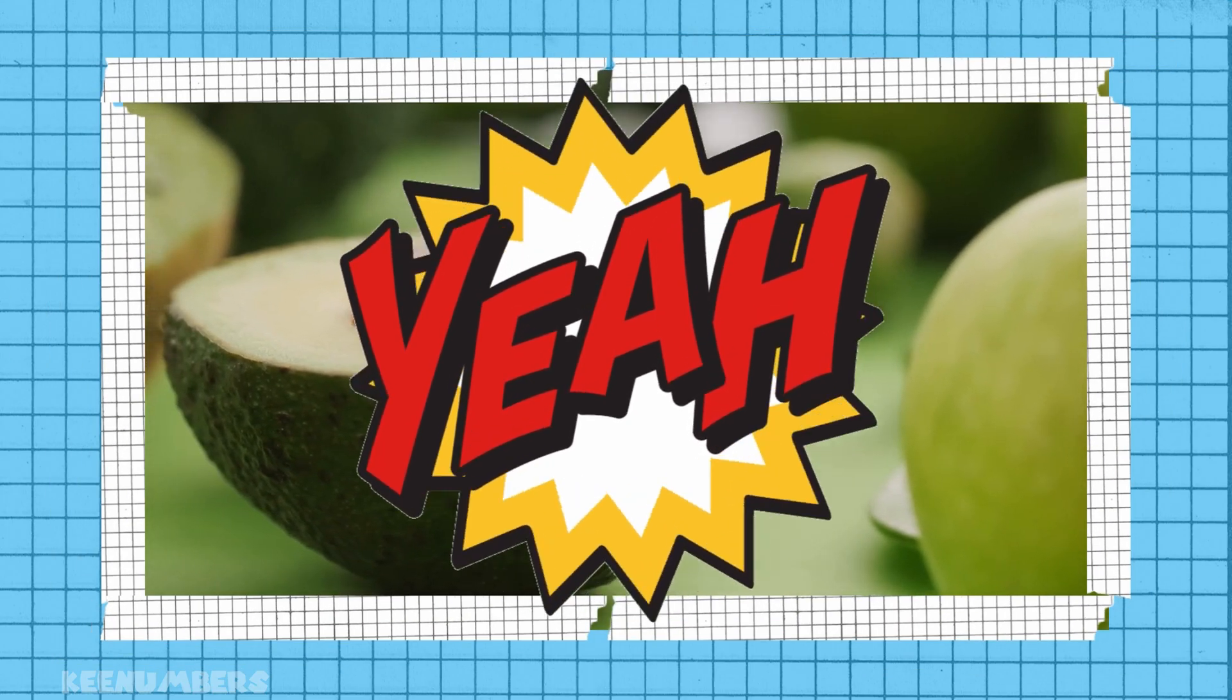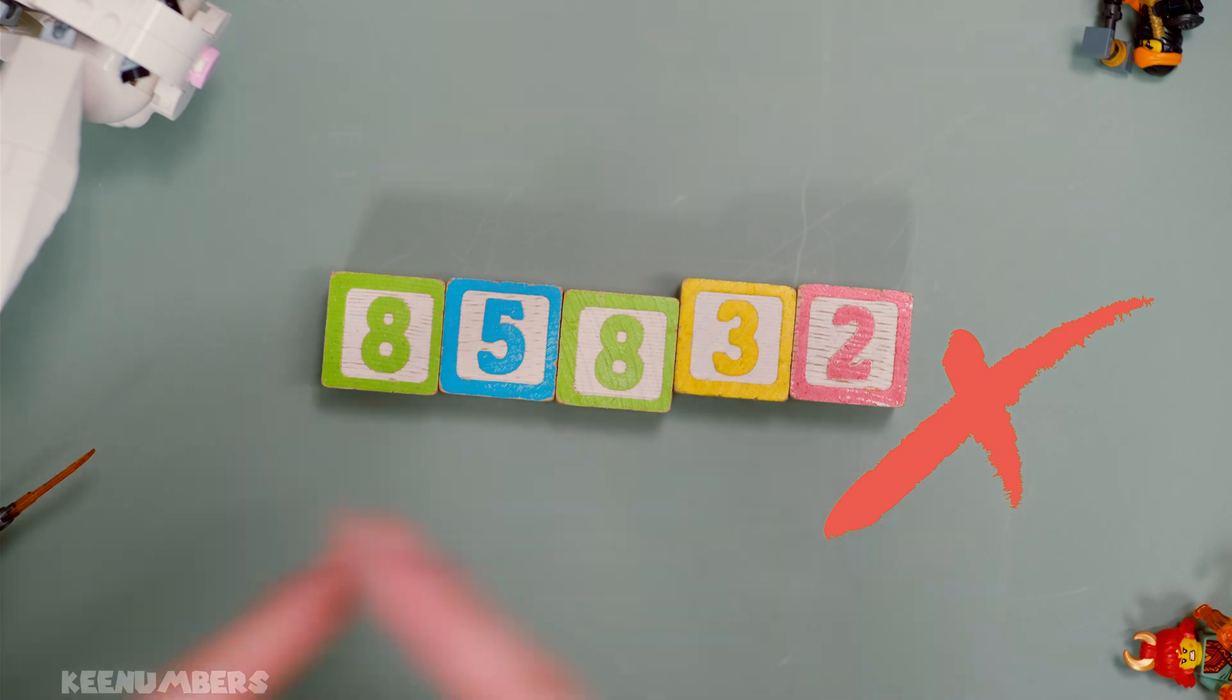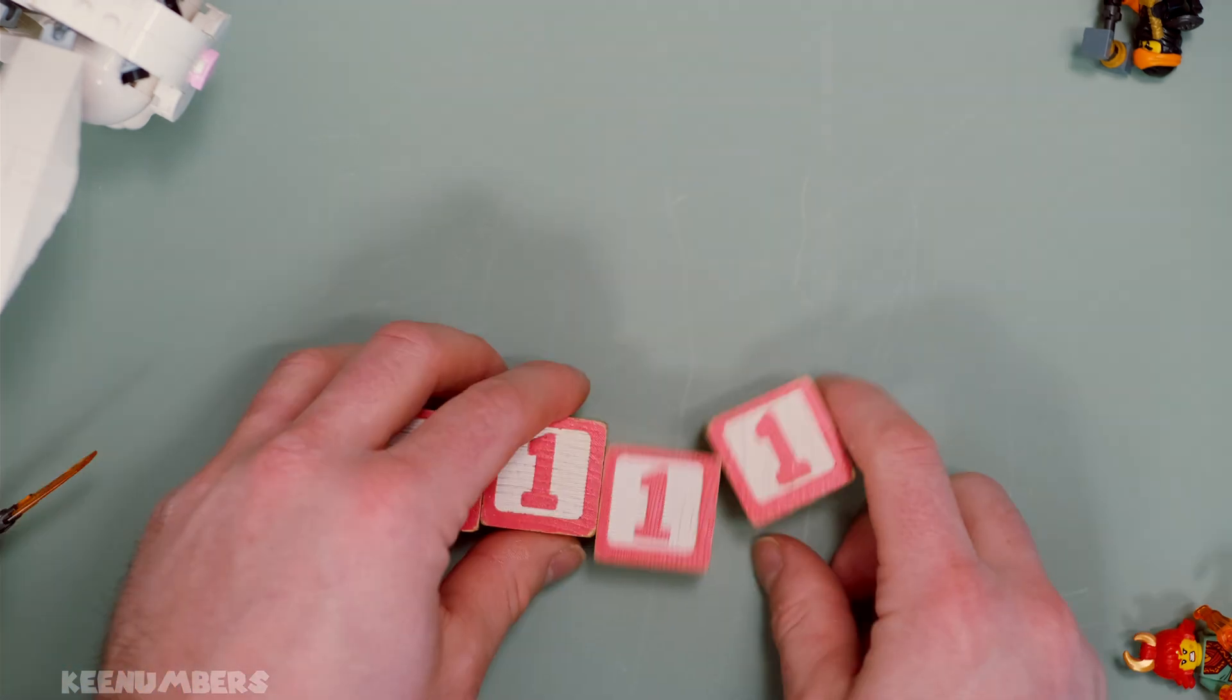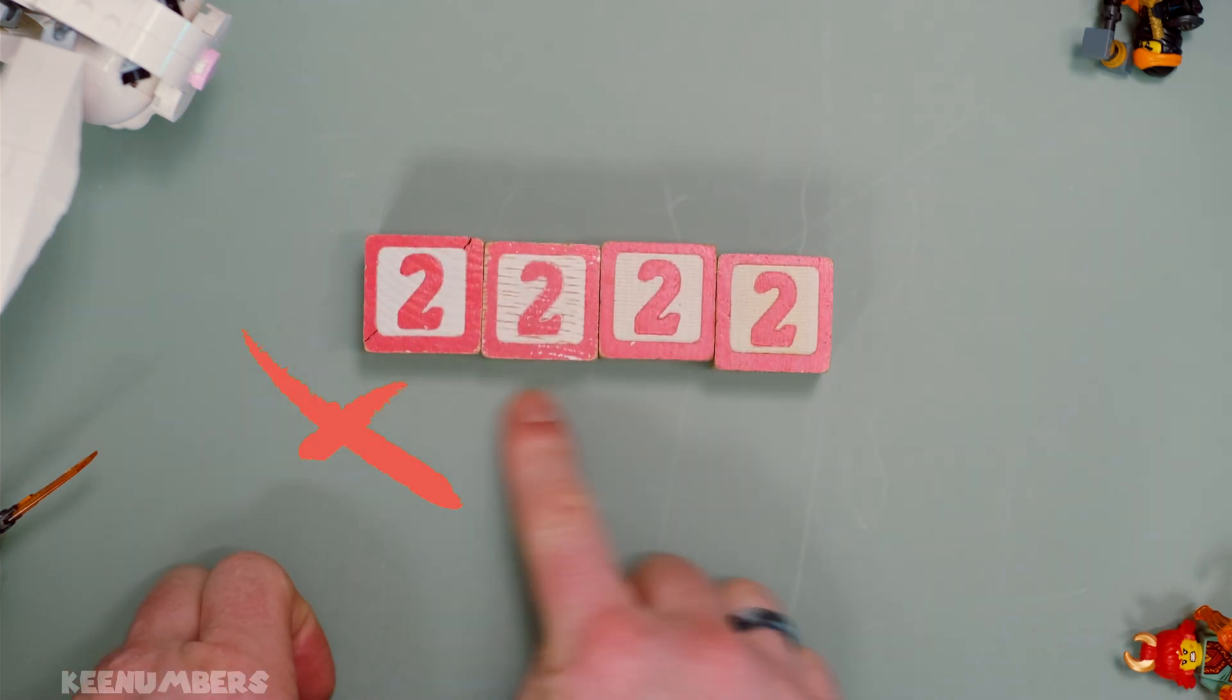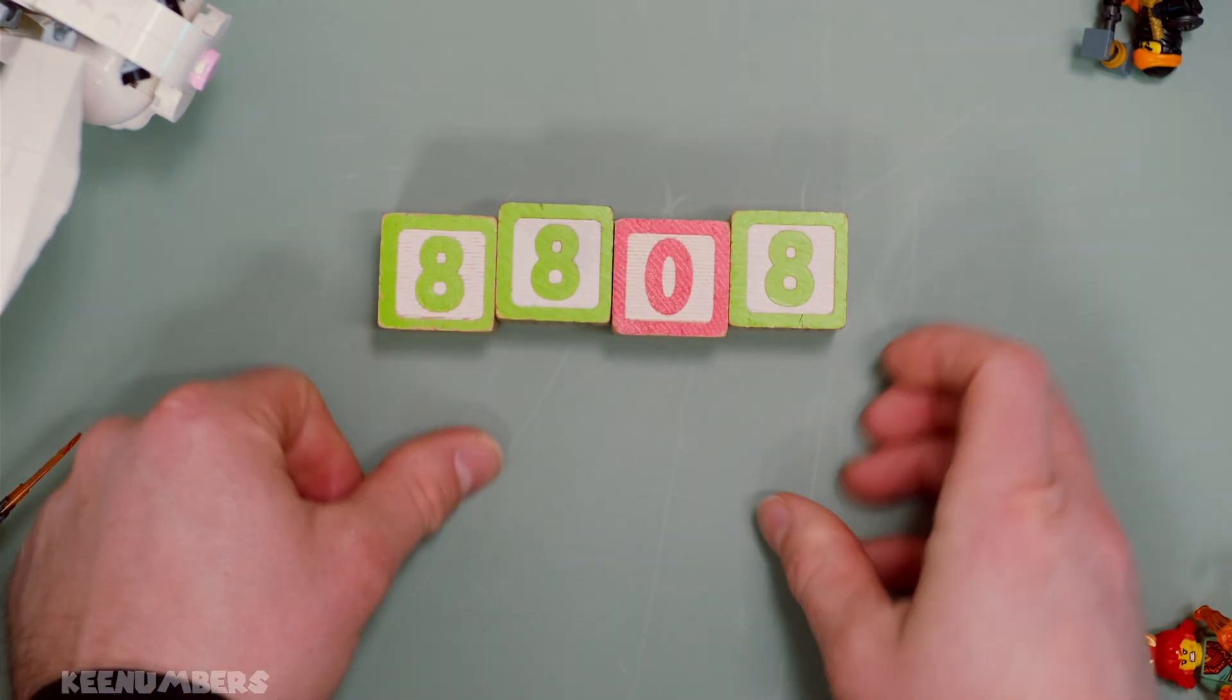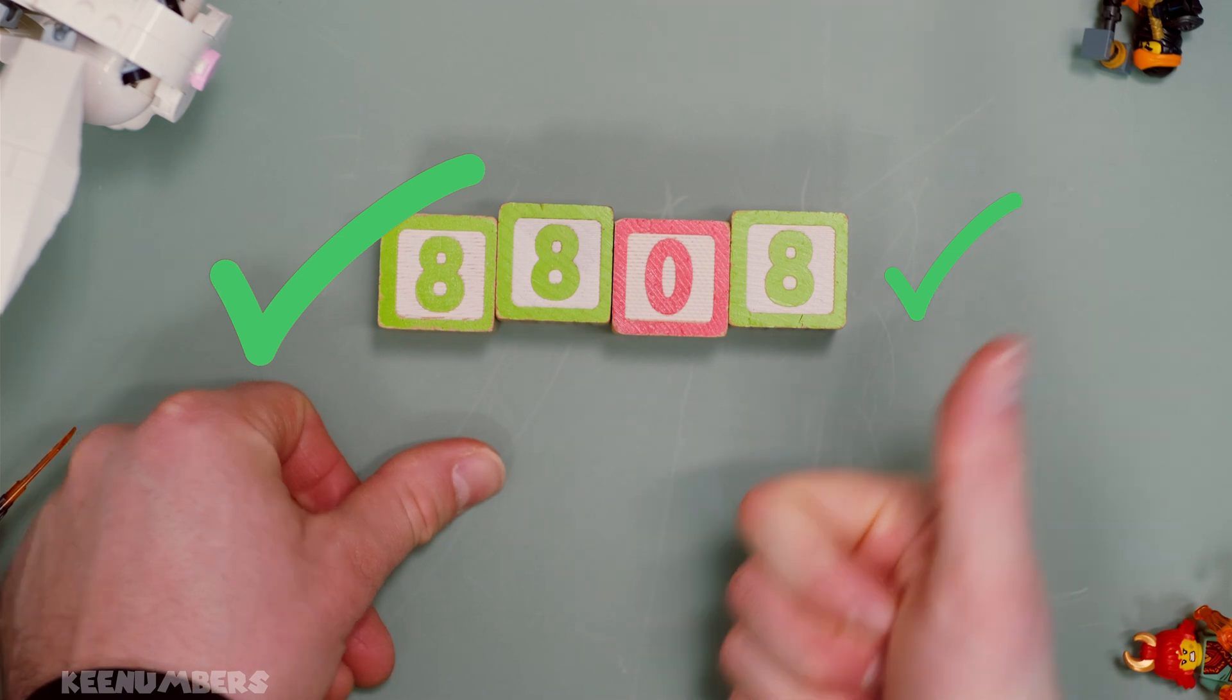A couple of rules about Kaprekar's constant. One, it has to be a four digit number. Two, you cannot do a number where all the digits are the same, like one, one, one, one, or two, two, two, two. There has to be some difference in the digits.